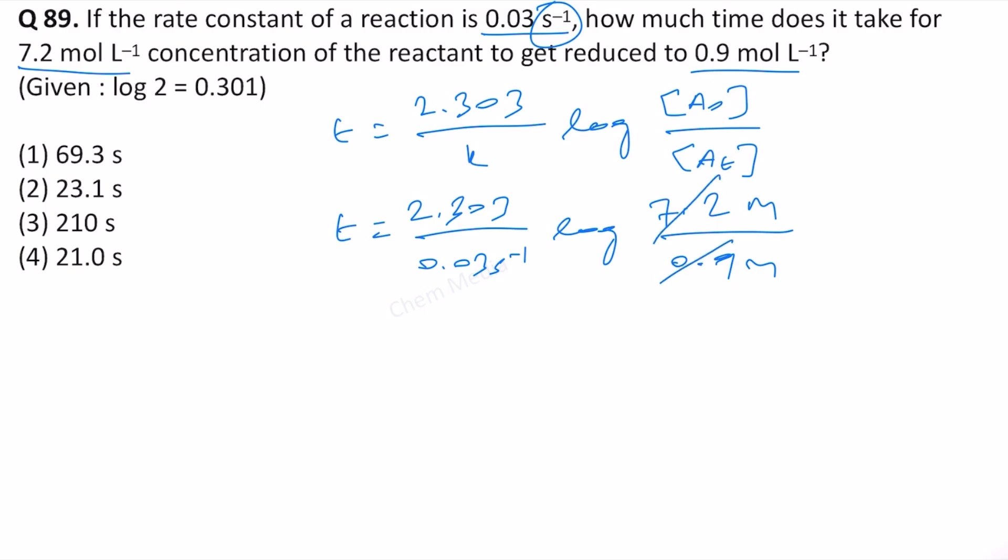Therefore, this is 8. 2.303 divided by, let us write it this way, 3 times 10 to the power minus 2, log 8. We can write it as 2 to the power 3 and bring the 3 to the front.